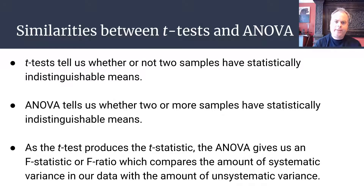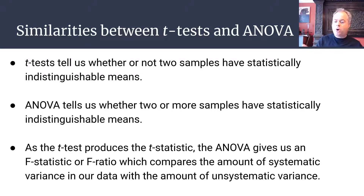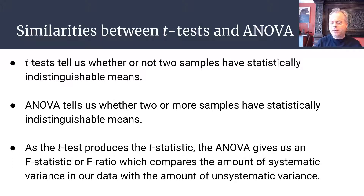So we don't do multiple t-tests — we do analysis of variance. There are similarities between t-tests and ANOVA: t-tests tell us whether two samples have statistically indistinguishable means, while ANOVA tells us whether two or more samples have statistically indistinguishable means. As the t-test produces the t-statistic, ANOVA gives us an F-statistic or F-ratio. This F-ratio compares the amount of systematic variance in our data — the variance caused by our experimental manipulation — relative to the amount of unsystematic variance, which is just general variability and noise regardless of any experimental manipulation.